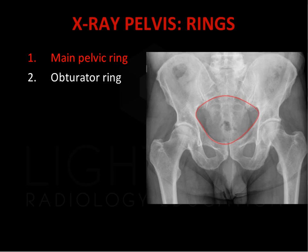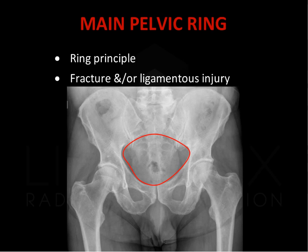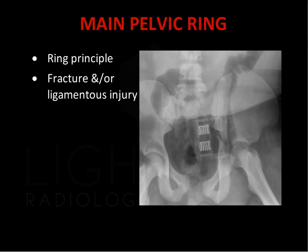The first pelvic ring to assess is the main pelvic ring. This is formed by the inner margin of the sacrum, iliac, and pubic bones, as well as the sacroiliac joint and pubic symphysis. This case demonstrates a fracture of the main pelvic ring involving the left iliac bone and acetabulum. The second injury to the ring is disruption of the pubic symphysis, known as pubic diastasis.